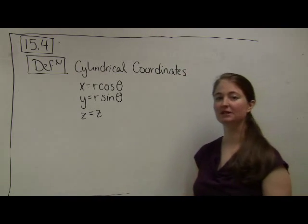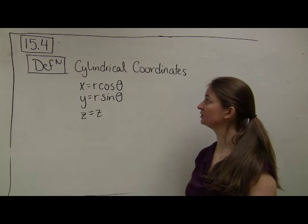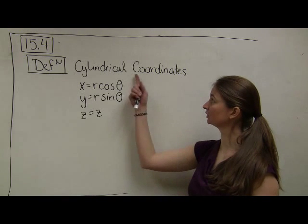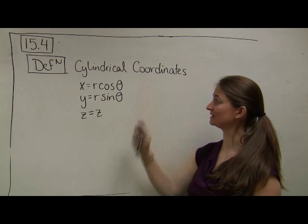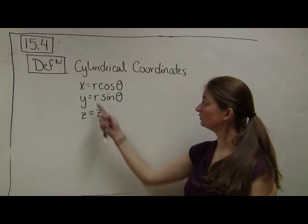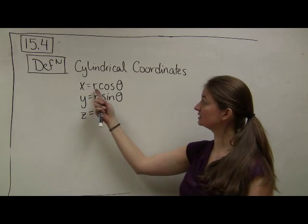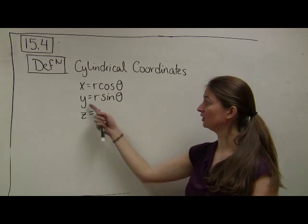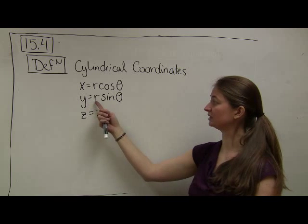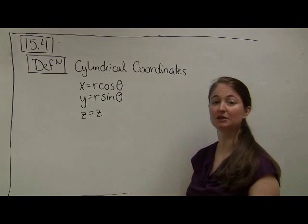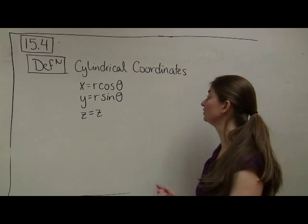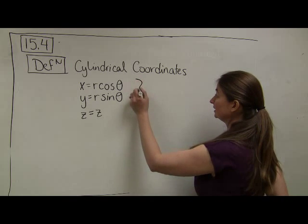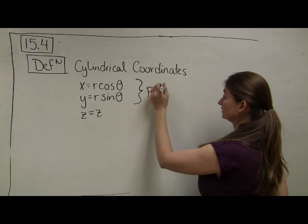Our first definition is going to be the definition for cylindrical coordinates. We define cylindrical coordinates as a coordinate transformation for which x is equal to r cosine theta, y is equal to r sine theta, and z is equal to z. Notice that this isn't anything new because this is exactly how we define polar coordinates.